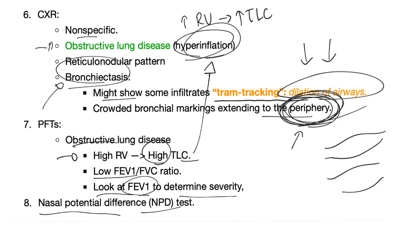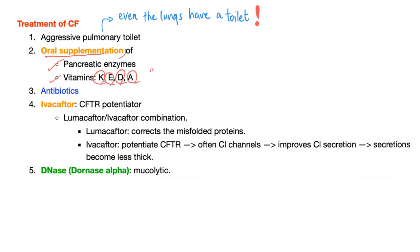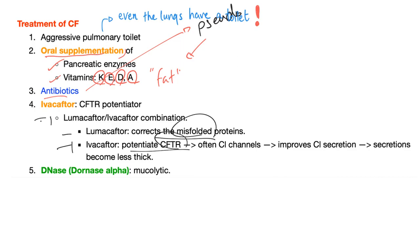The nasal potential difference (NPD) test is used for sophisticated diagnosis. How to treat cystic fibrosis? Aggressive pulmonary toilet — try to get rid of sputum. Oral supplementation of pancreatic enzymes and fat-soluble vitamins K, E, D, and A, because the pancreas is compromised. Antibiotics for bacterial infection, especially Pseudomonas — memorize the anti-pseudomonal antibiotics. Ivacaftor is a CFTR potentiator. The lumacaftor-ivacaftor combination corrects the misfolded protein with lumacaftor and potentiates CFTR with ivacaftor.